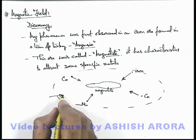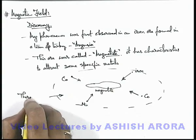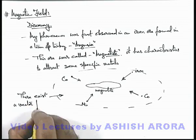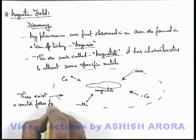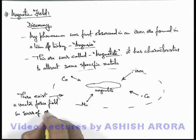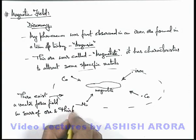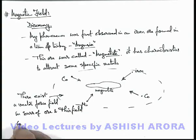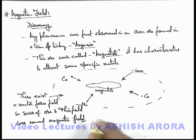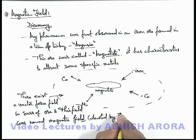Here it was analyzed and observed that there exists a vector force field in the surrounding, which is called magnetic field. This field was named magnetic field, and it was also denoted by a vector, B vector.